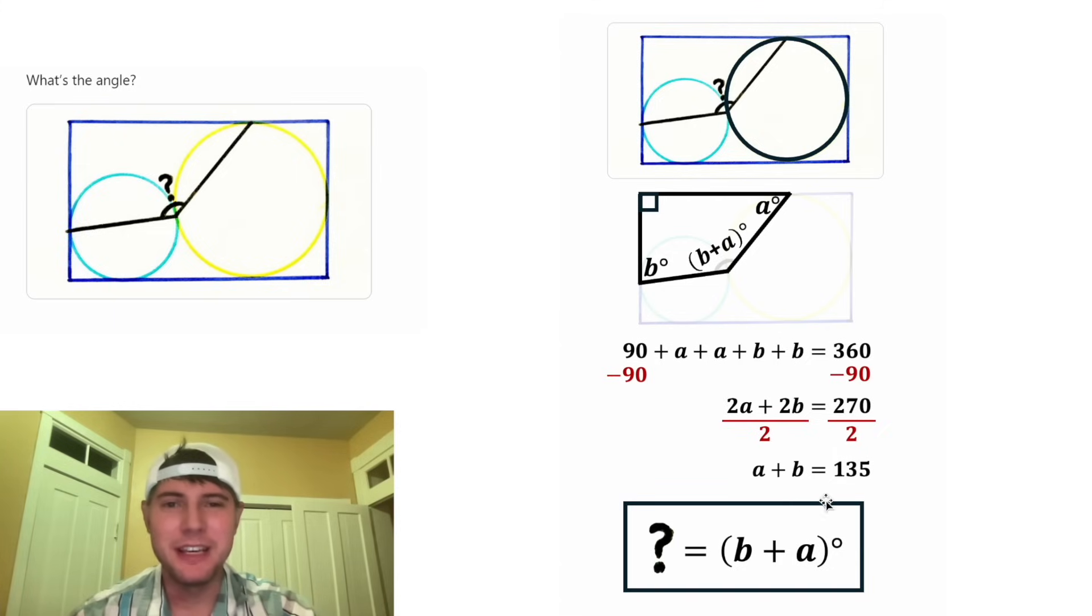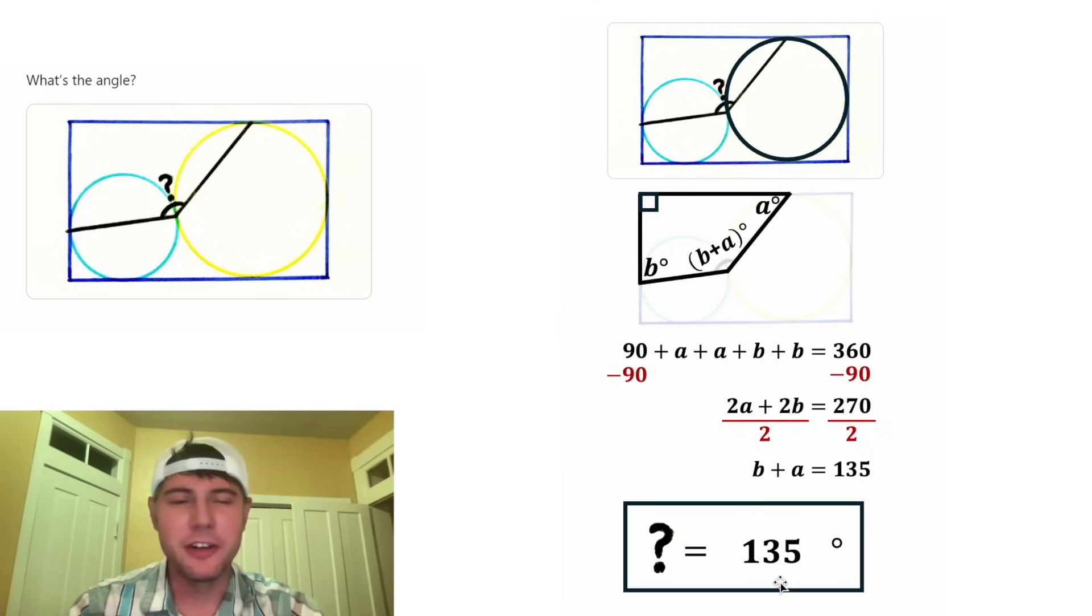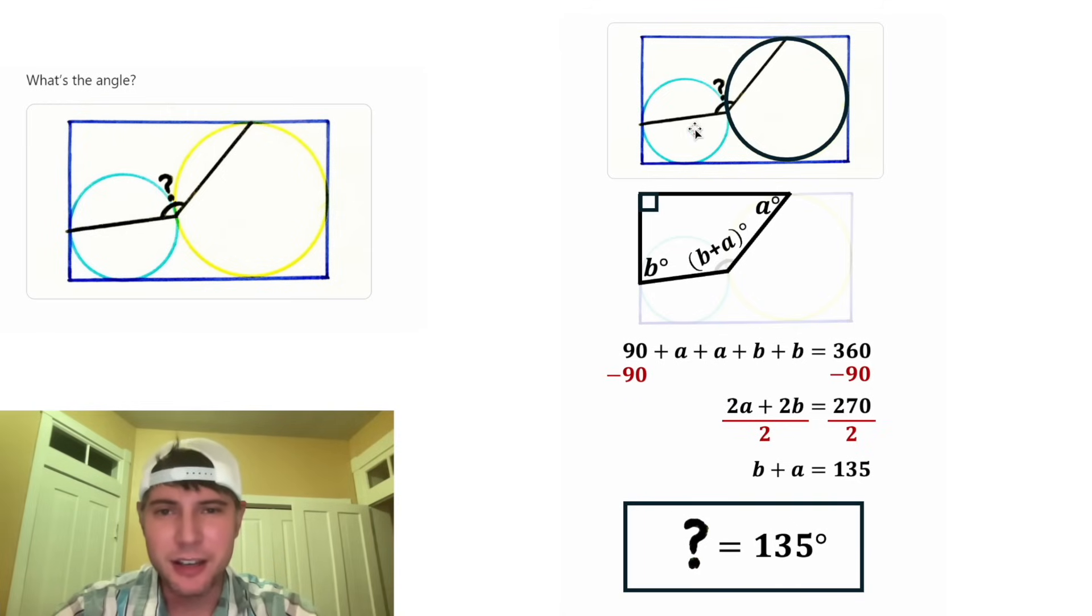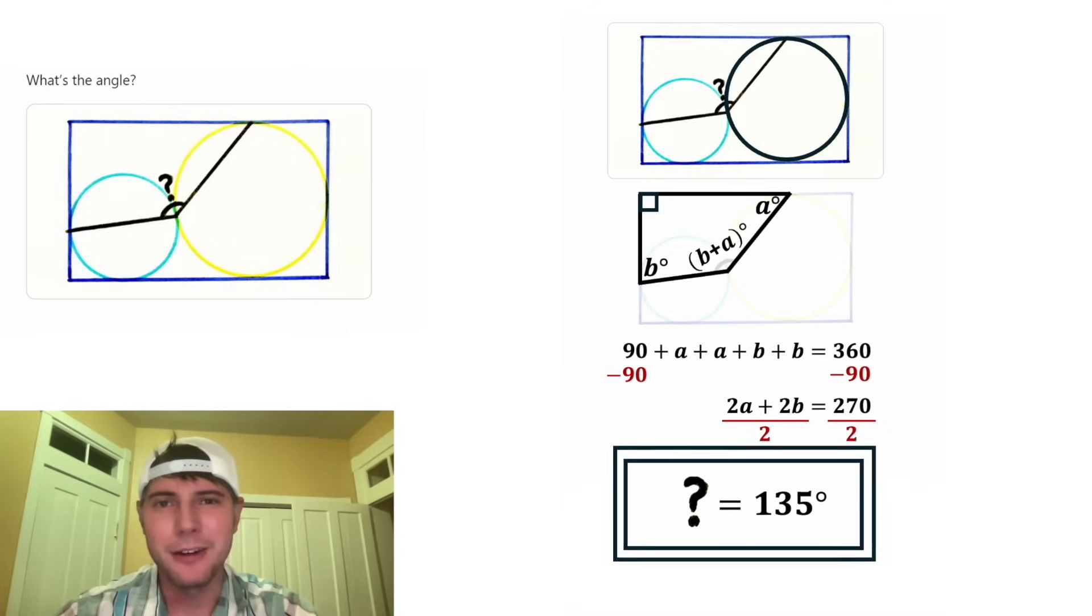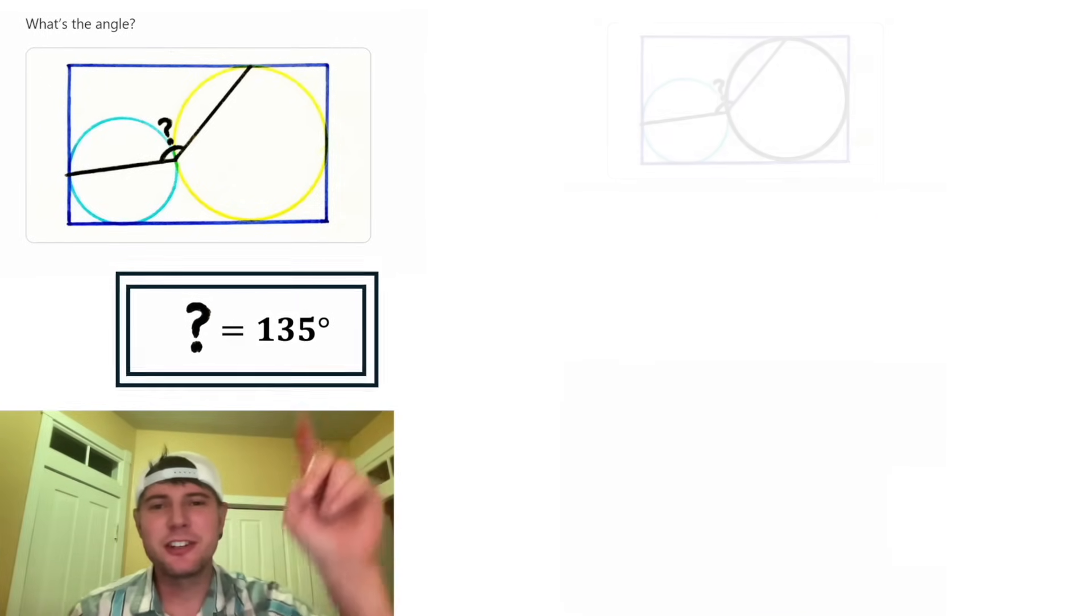So now we know A plus B equals 135. And our question mark was B plus A. We can switch these. And now in place of B plus A, we can plug in 135. So this is the answer to our question. This angle is going to be 135 degrees. Let's put a box around it. How exciting. This is the answer to day 11.